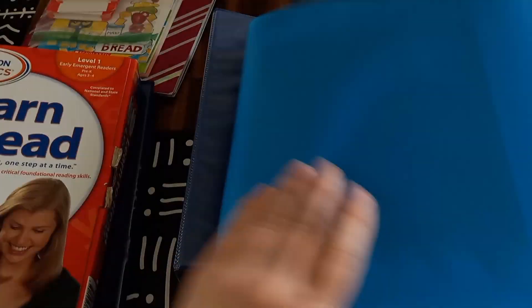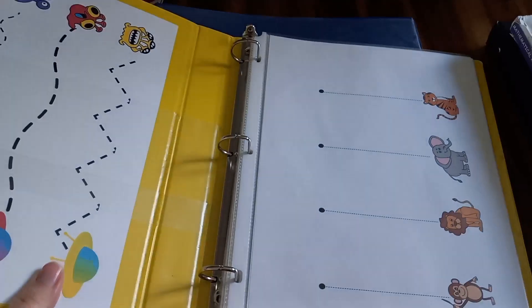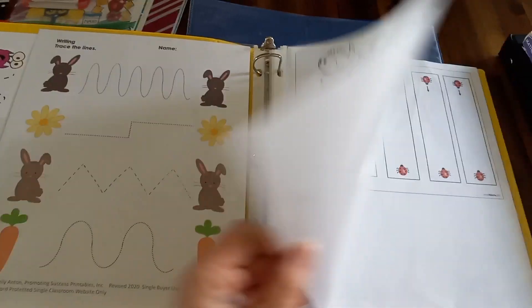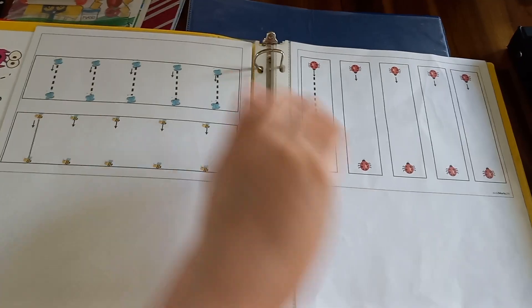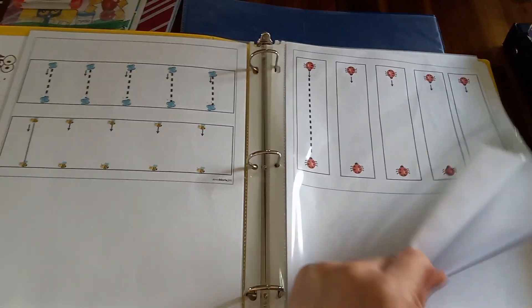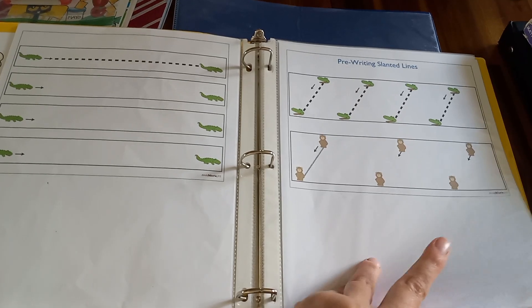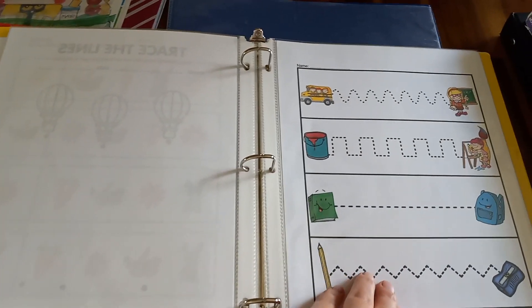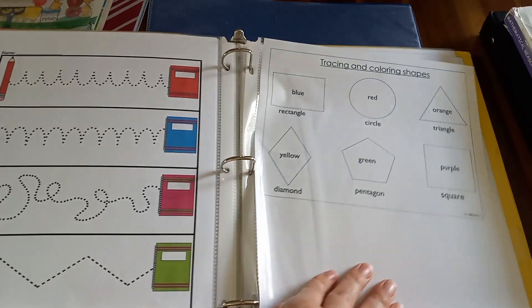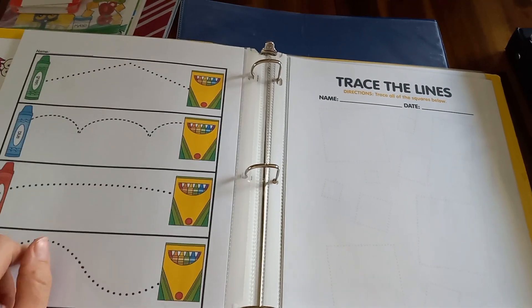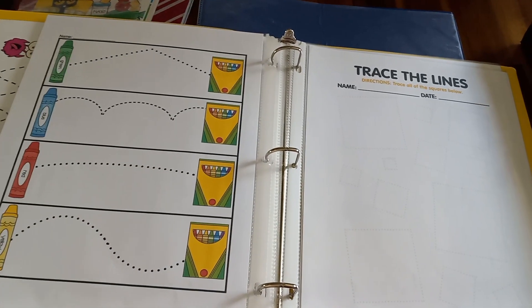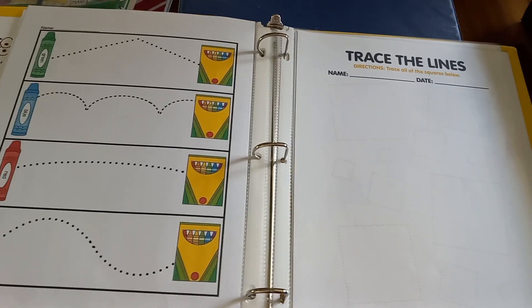And then I alternate this book. This is just basic tracing lines. You have different lines here and you just simply have them trace the lines to learn their pencil control. As you progress through this binder, you start getting a little bit harder lines, shapes, a little bit harder things to do with the pencil to practice their pencil control. And I alternate this book and the mazes book.